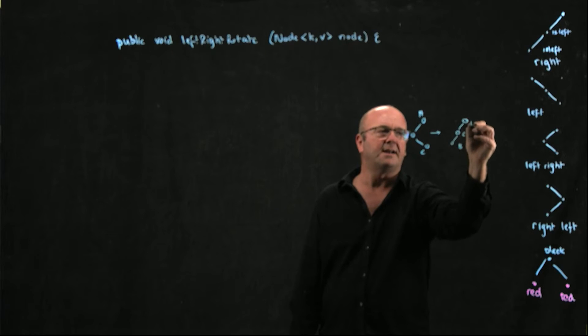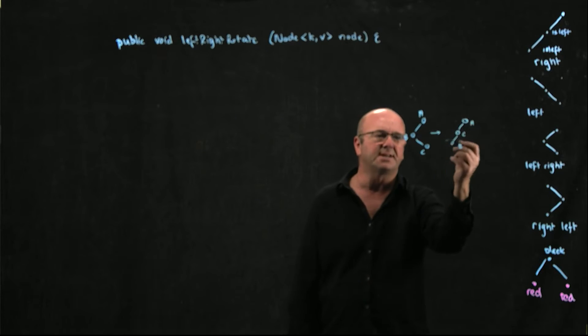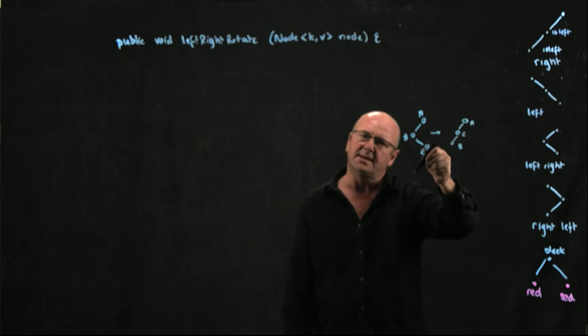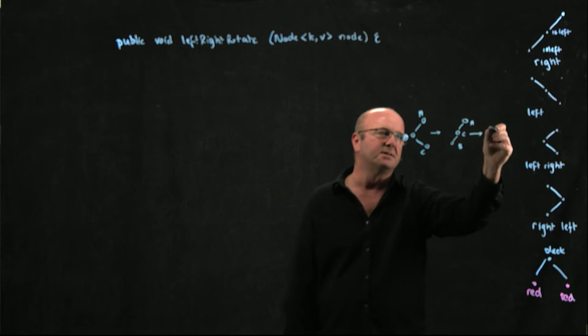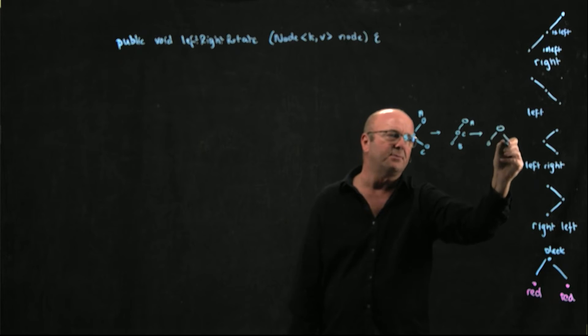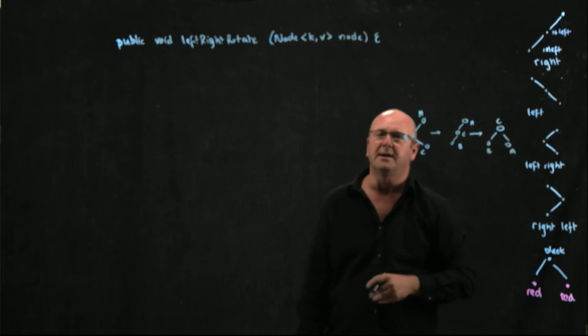So we're going to end up with A, C, B. So we rotate the B around the C. We're rotating the parent and then we rotate the grandparent so that we end up with B, C and A.